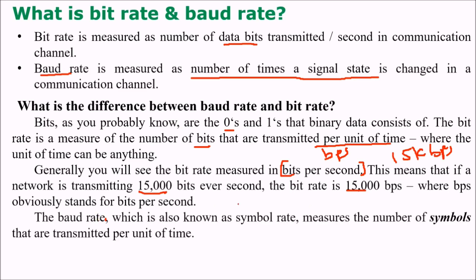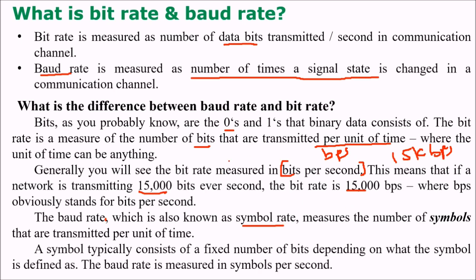The baud rate, which is also known as the symbol rate, measures the number of symbols transmitted per unit of time. A symbol typically consists of a fixed number of bits, depending on how the symbol is defined. The baud rate is measured in symbols per second, or signals per second, or signals per unit time.